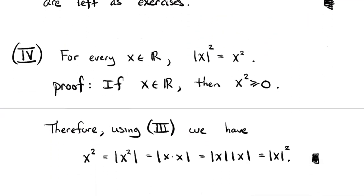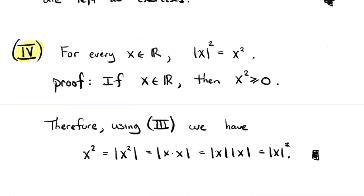Property four: for any real number x, the square of its absolute value equals the square of the number — that is, |x|² = x². By order properties, for any real number x, its square is never negative: x² ≥ 0. So if we use property three, x² equals its own absolute value. But x² by definition is x times x, and applying property three, the absolute value of x times x equals |x| · |x|, which is just |x|².